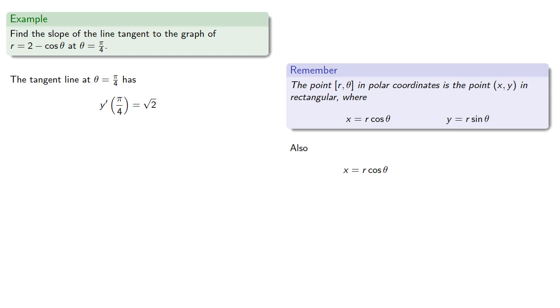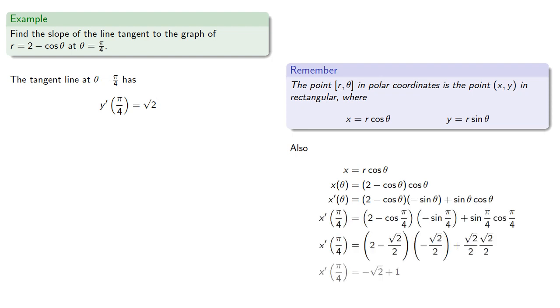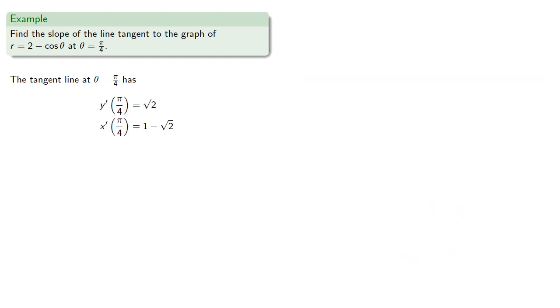Similarly, x is r cosine theta, again r is 2 minus cosine theta, so x of theta is... And the derivative will be... And at pi fourths we'll get... So we know both y prime and x prime, so dy dx will be the quotient.